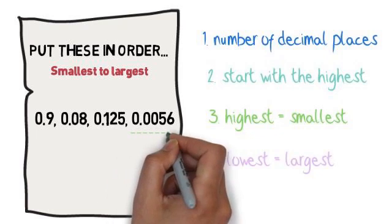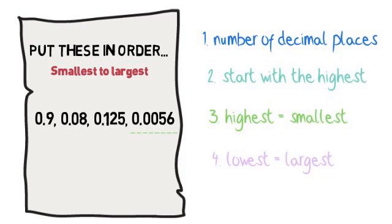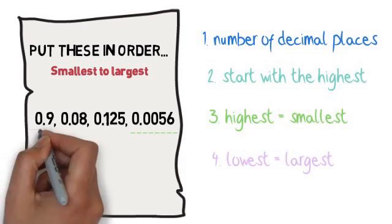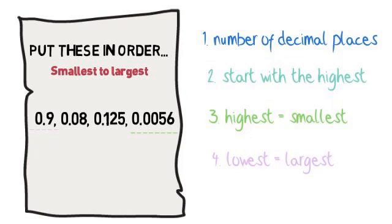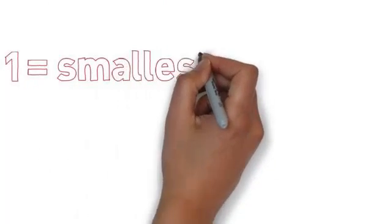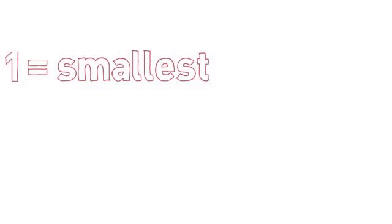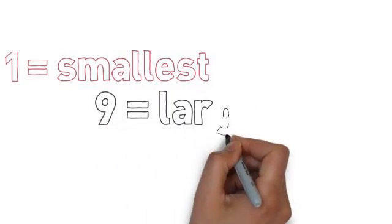Using the example above this would mean, that the smallest number is 0.0056, and the highest number is 0.9. Once you have looked at the decimal places, you would then look at the actual digits themselves. Number one would be the smallest, number nine would be the largest.